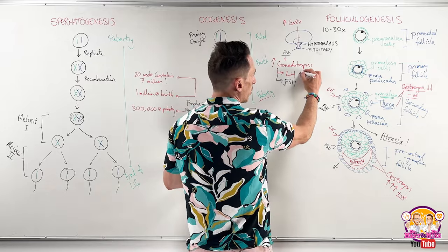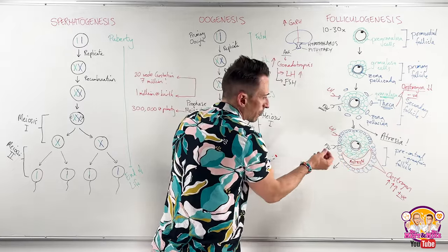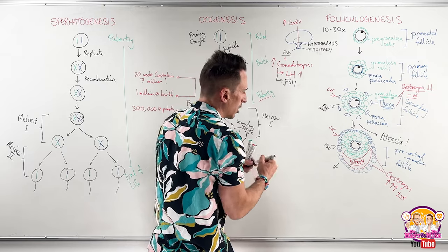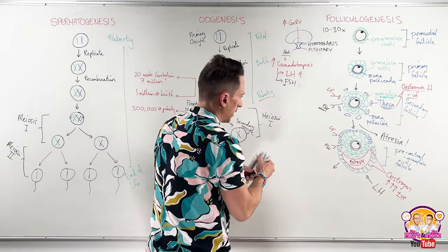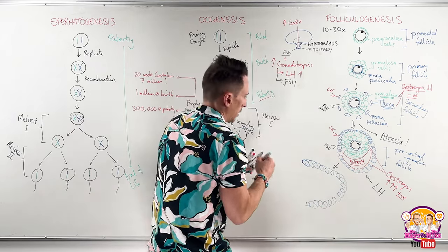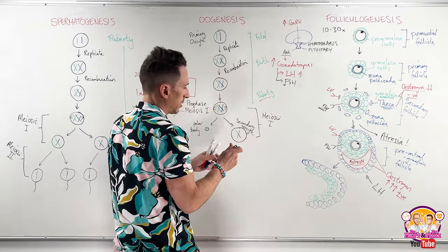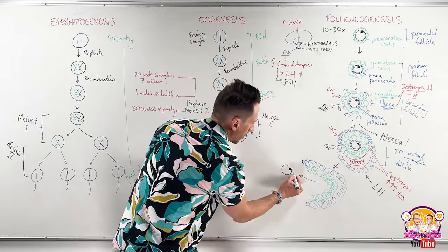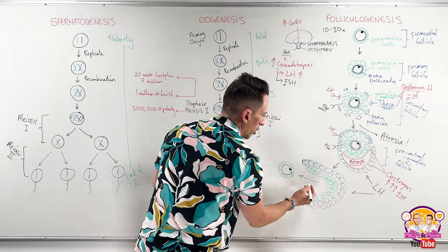The LH surge tells the theca cells to start releasing enzymes that break down the follicle walls, resulting in ovulation. The theca and granulosa cells rupture, and the egg — the oocyte — ovulates, surrounded by just a couple of granulosa cells. Ovulation occurs at day 14 of the menstrual cycle.